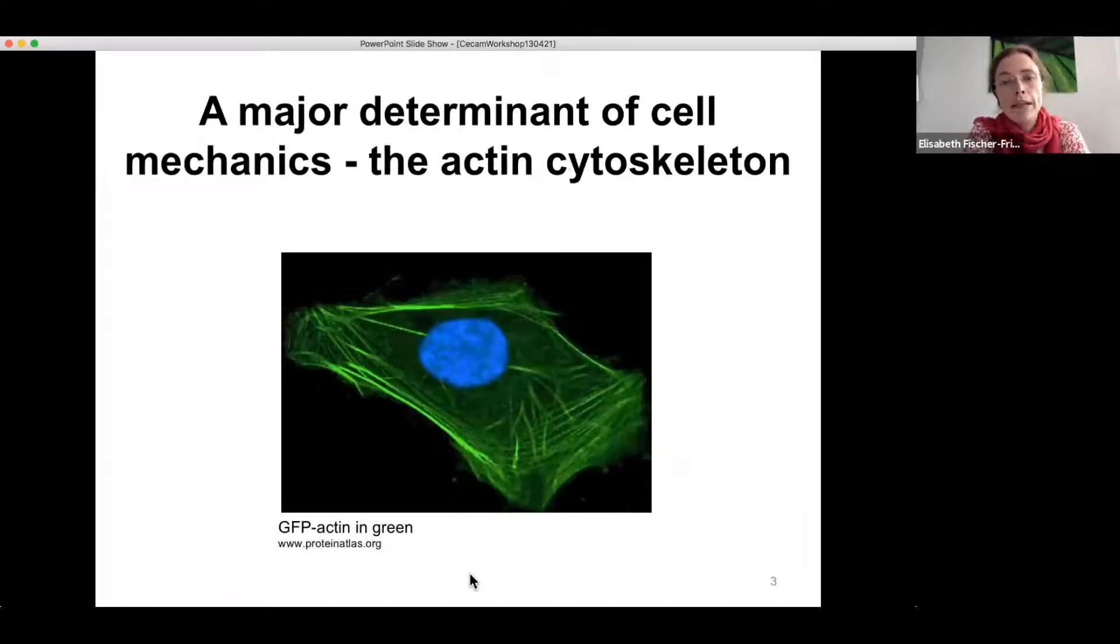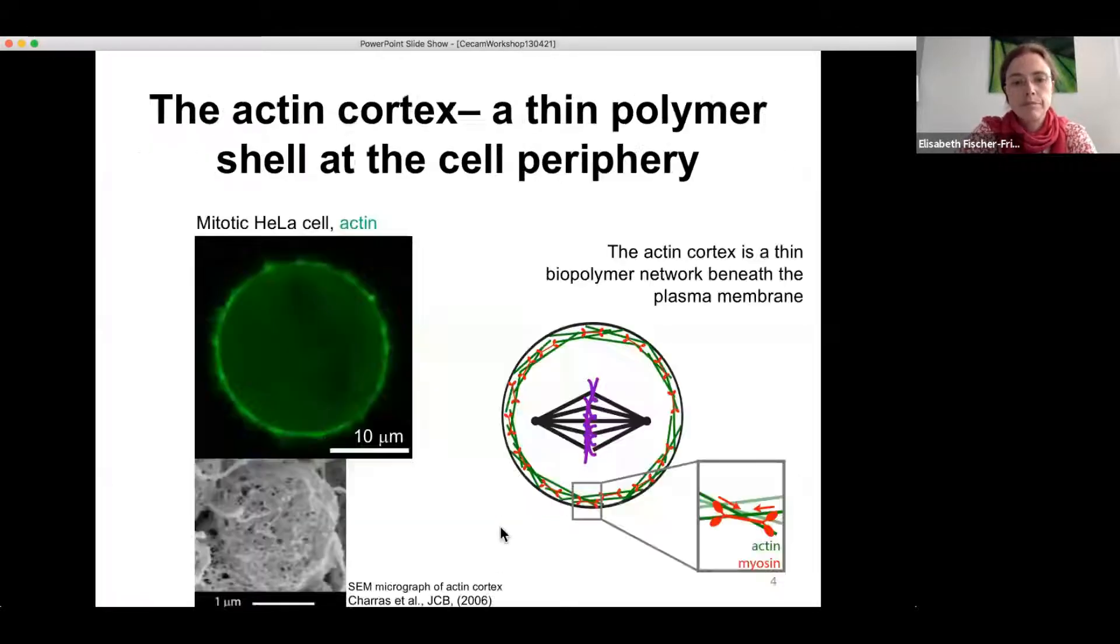Okay, so one major determinant of cell mechanics is the actin cytoskeleton. And as the name suggests, this has a similar task as our bone skeleton in the body. So this provides a mechanical scaffold to the cell, giving mechanical integrity and giving a certain shape memory. And we look at a particular structure of the actin cytoskeleton, namely the actin cortex.